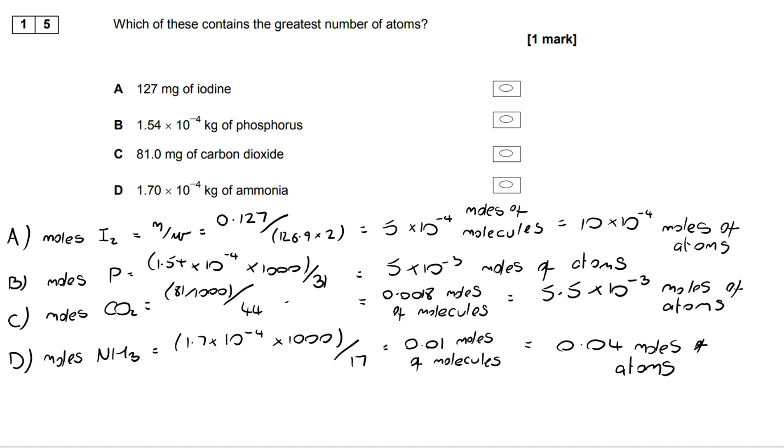And finally, moles of NH3, well once again it's in kilograms, so we divide that mass by 1000, we get 0.01 moles of molecules, there are four atoms within ammonia, so 0.04 moles of atoms.